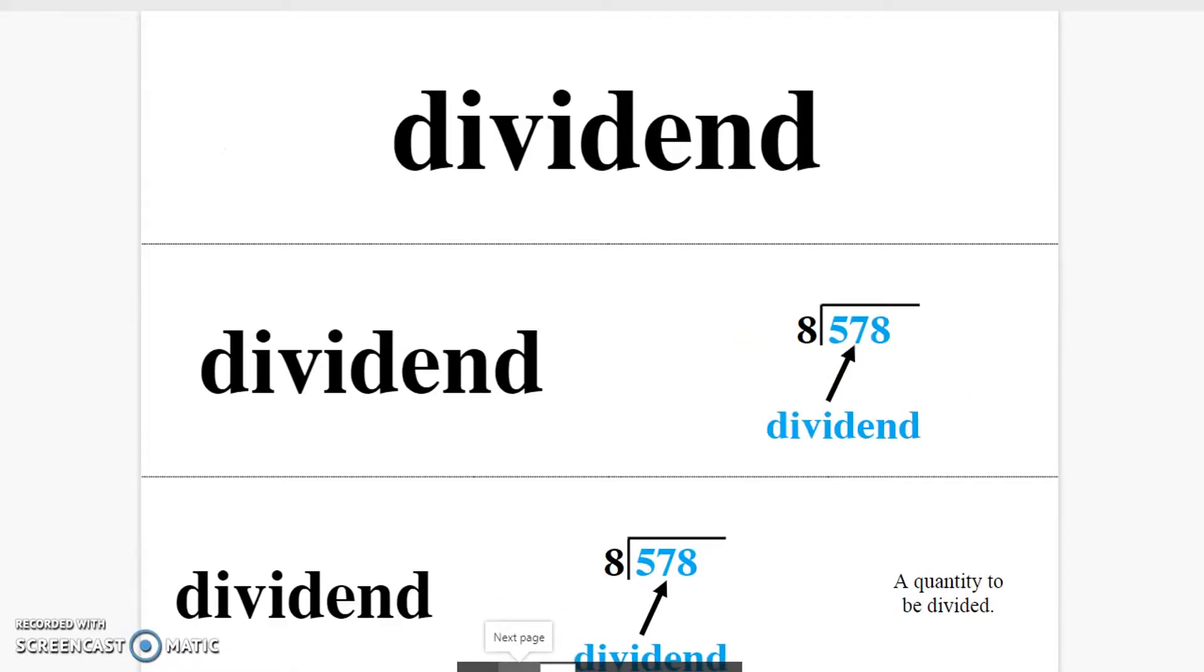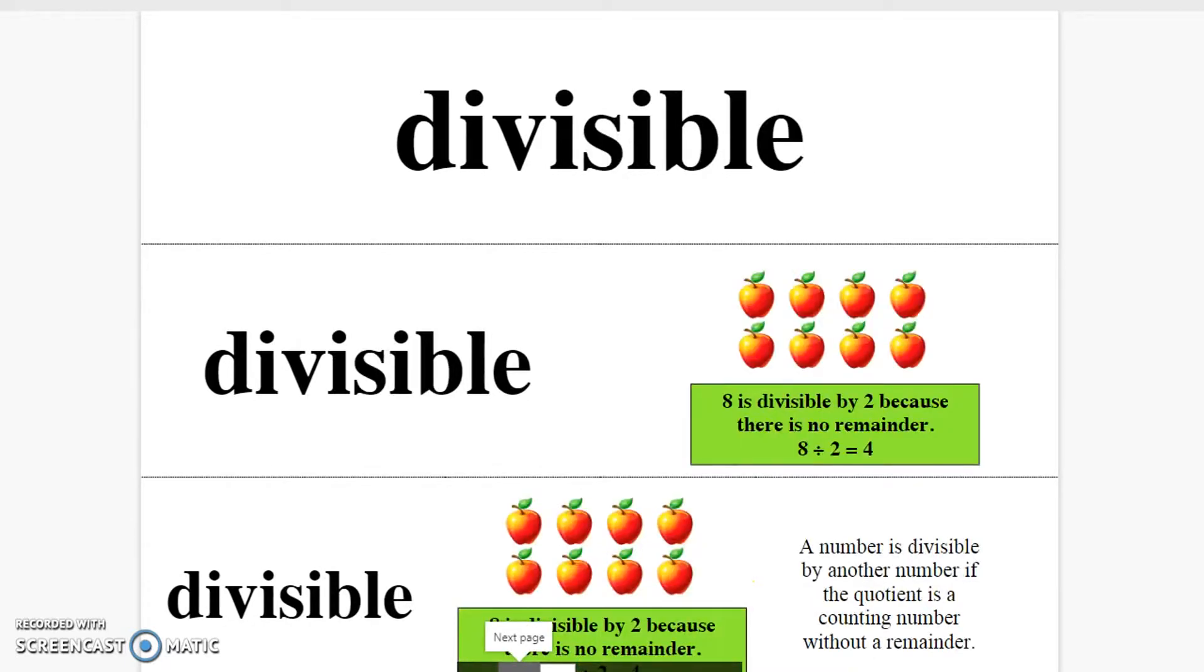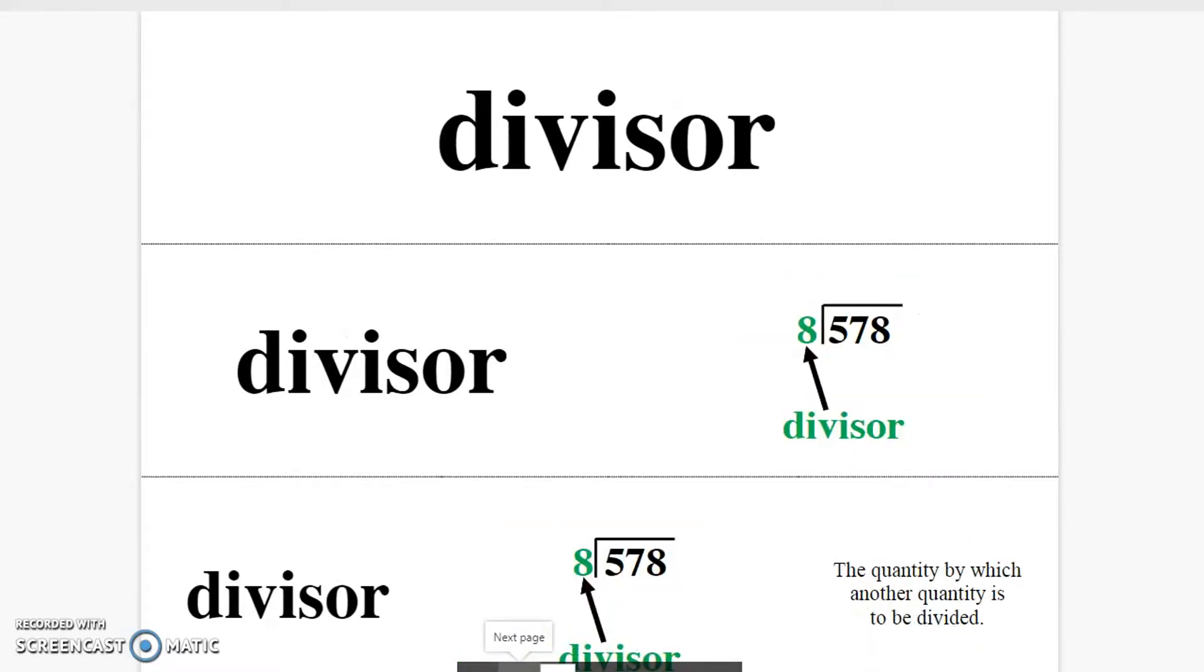Dividend. A quantity to be divided. Divisible. A number is divisible by another number if the quotient is a counting number without a remainder. Divisor. The quantity by which another quantity is to be divided.